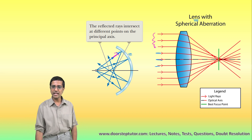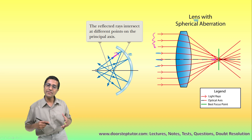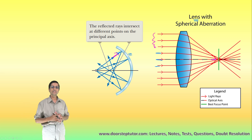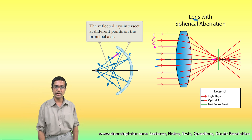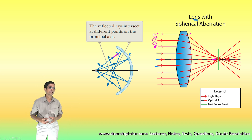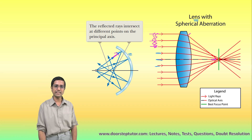These rays converge slightly away from the focus. The rays which are at the very corner of the lens and the mirror converge away from the focus, and this is known as spherical aberration — aberration means incorrectness. Because of this spherical aberration, rays which are not para-axial and are very far from the principal axis do not converge at the focus, even though they are coming from infinity and are parallel to the principal axis.